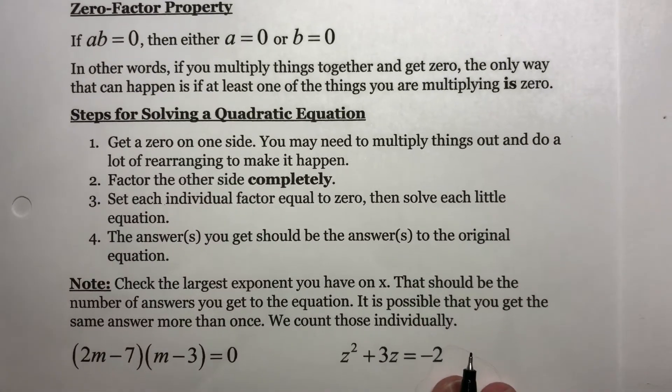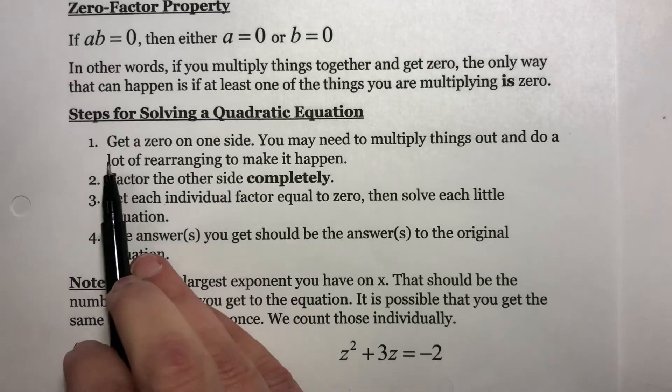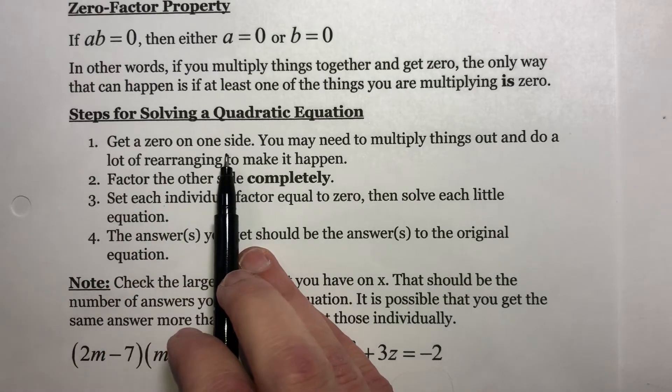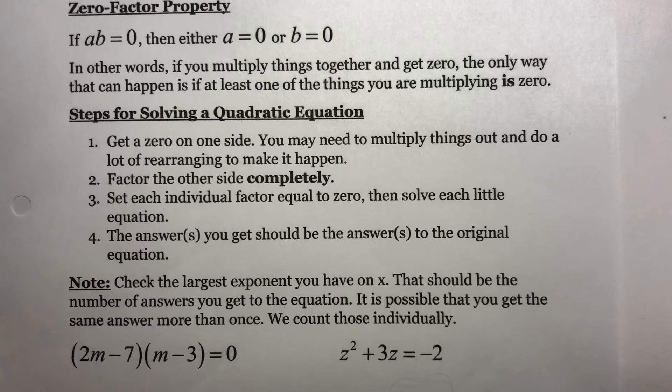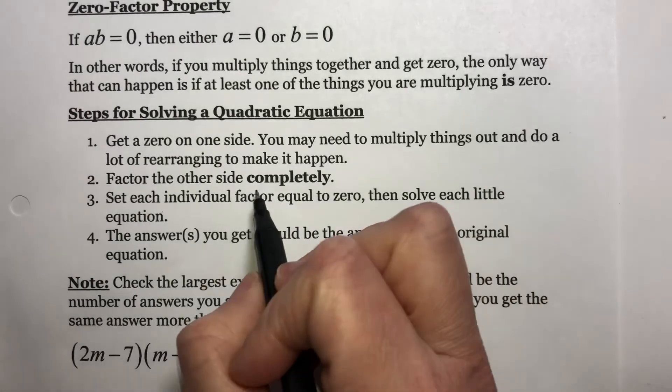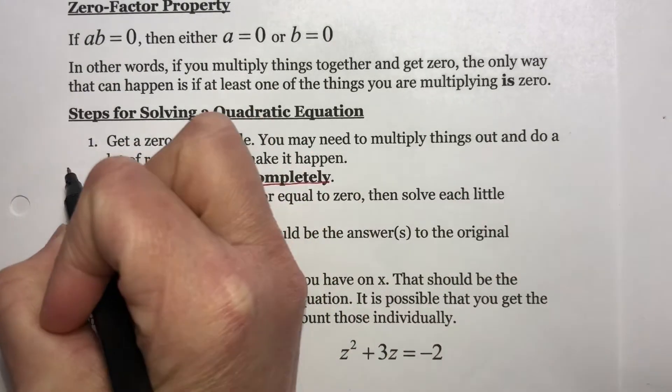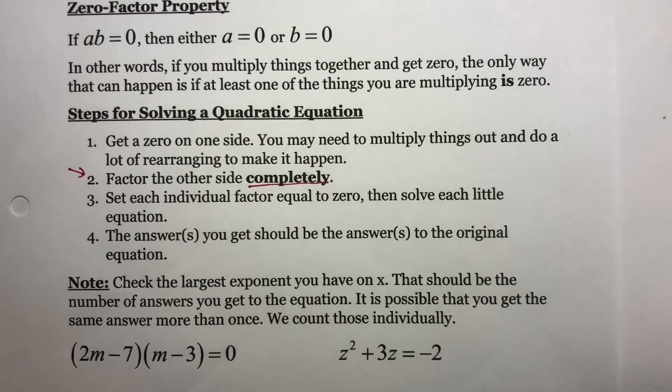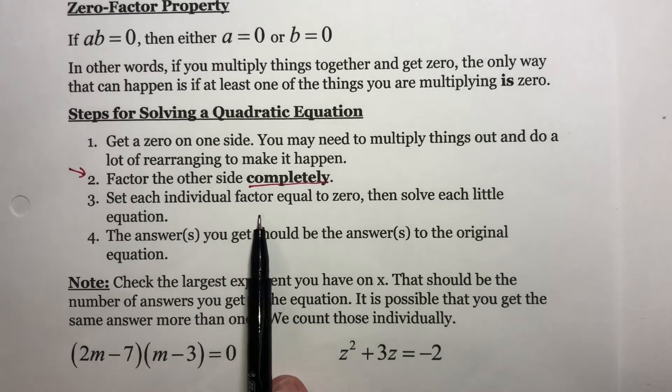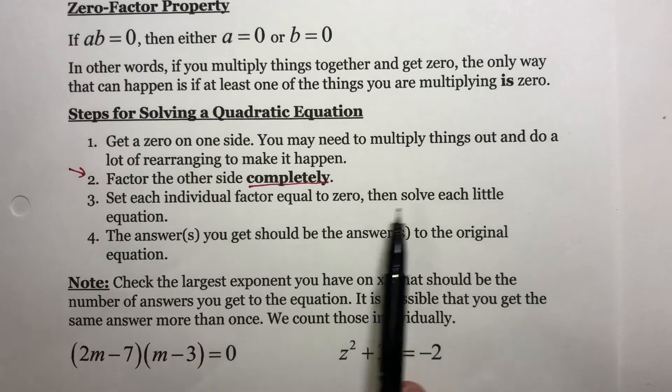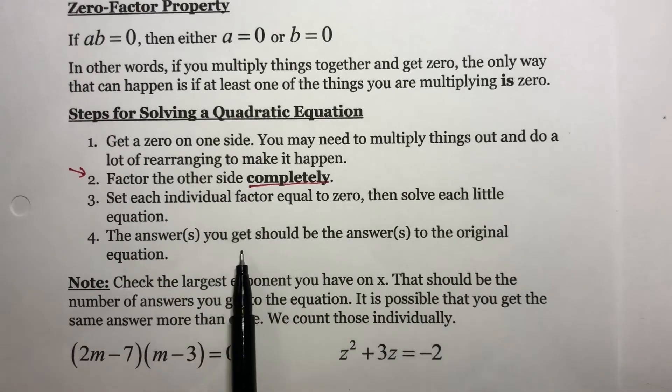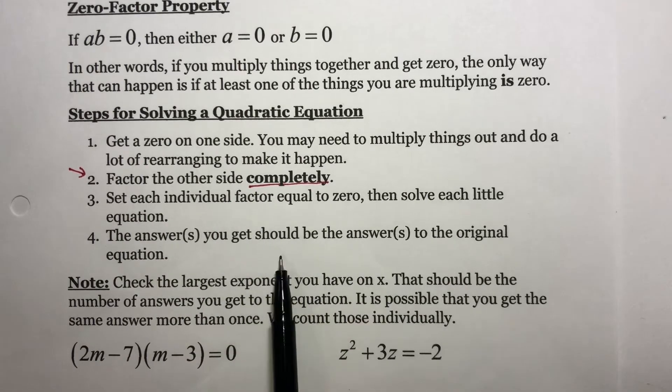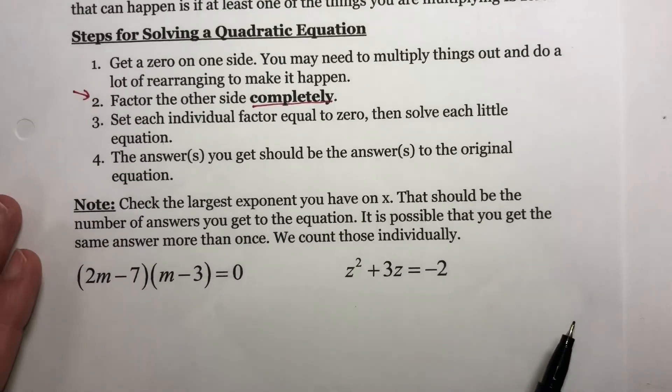So, our steps for solving a quadratic. We have to get a 0 on one side. We may have to multiply things out or do a lot of rearranging to make that happen. Then we factor each side completely. This is probably the most difficult step—this is all of the stuff we've been doing in this chapter up until now. Then we set each individual factor equal to 0, and then solve each little equation. And then we should get two answers.